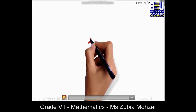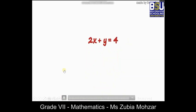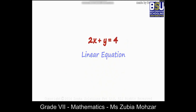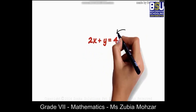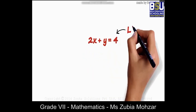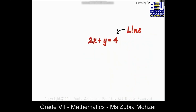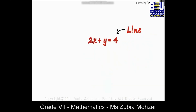2x plus y equals 4 is a linear equation. As it is linear, its graph will be a straight line. To draw any line we need a minimum of two points, and to find those points we can substitute different values in place of x and get the corresponding values for y.